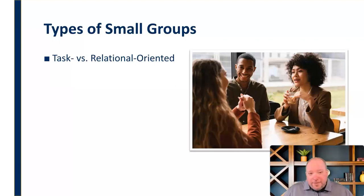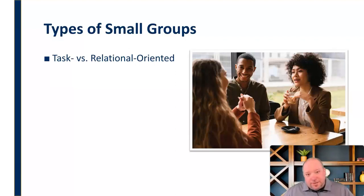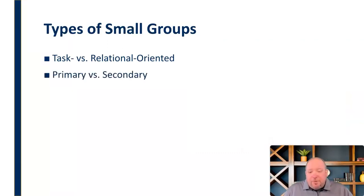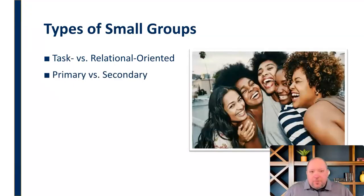There are different groups and they have different purposes, and there's a spectrum — it's not an either-or type of thing. You can have a little bit of both, but some groups are heavily task-oriented, some are heavily relationally oriented, and some fall somewhere in the middle along that spectrum. We can also look at what we call primary and secondary groups.